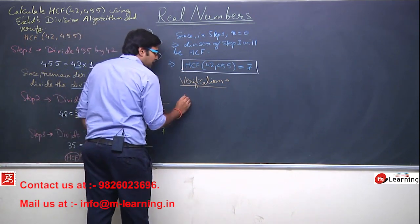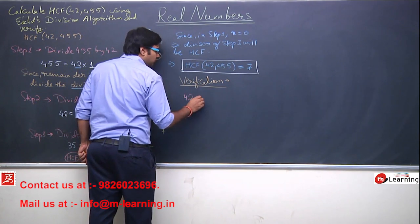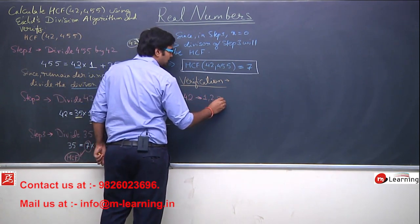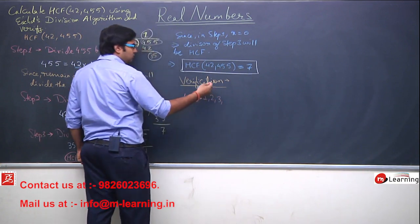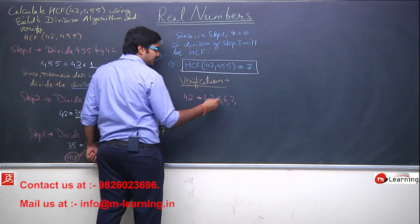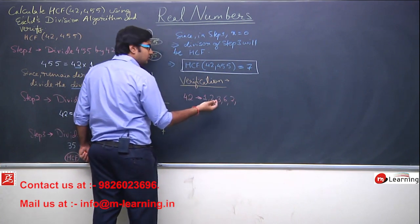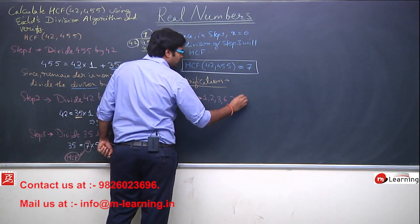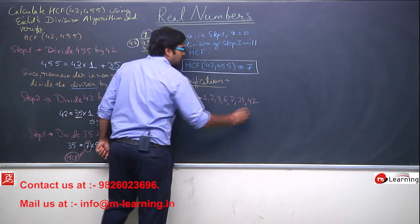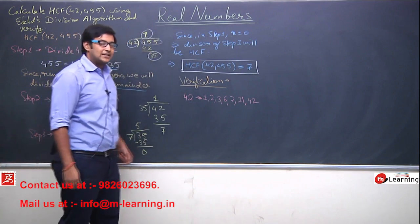So if I ask you the factors of 42, factors of 42 will be 1, 2, 3, 6, yes, 7, yes, 21. After 6, it will be 21 and then it will be 42. So these are the factors of 42.